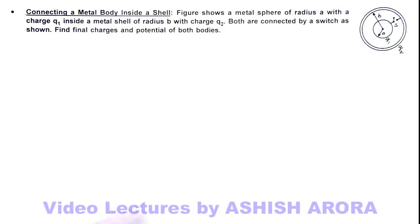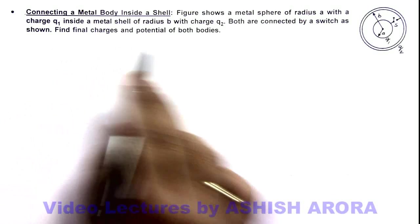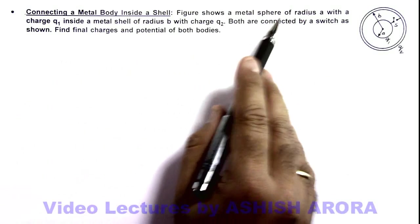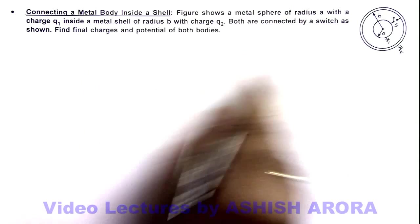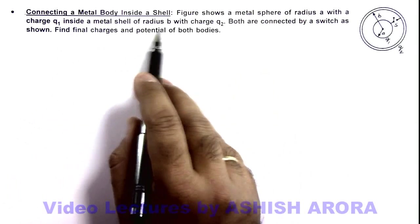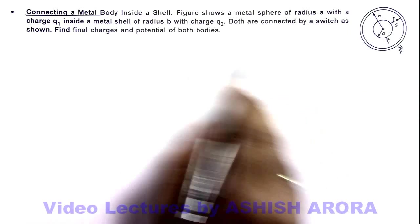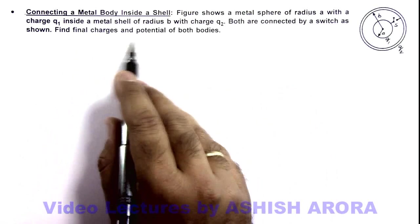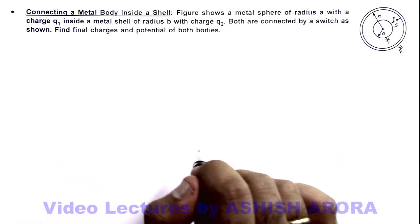In this illustration we'll study connecting a metal body inside a shell. The figure shows a metal sphere of radius a with charge q1 inside a metal shell of radius b having charge q2. Both are connected by a switch as shown, and we're required to find final charges and potential of both bodies.